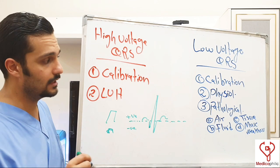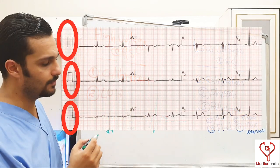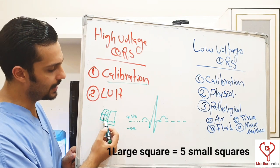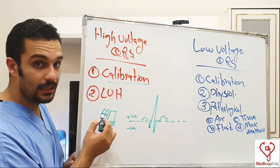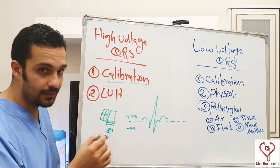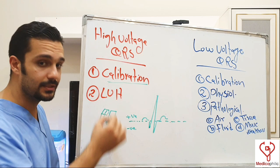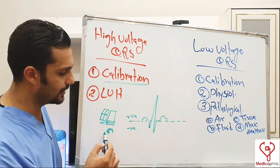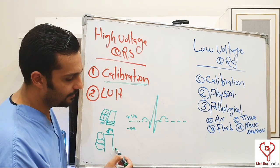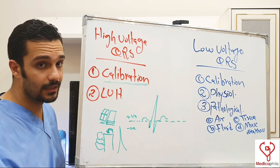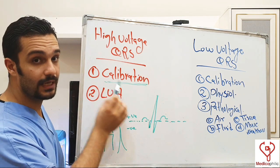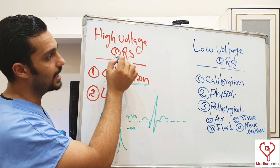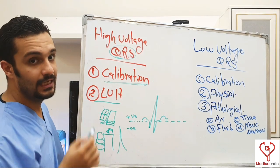Coming to high voltage QRS: it is important to check the calibration of the ECG paper. The normal calibration is two large squares in height and one large square in duration — that is ten small squares in height and five small squares in width. The calibration represents the amplitude the needle records when it receives voltage from the body. If the calibration was higher than two large squares, the R wave amplitude will appear high even though the patient has no disease. If calibration is at standard measurement and voltage is still high, we think of left ventricular hypertrophy.